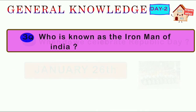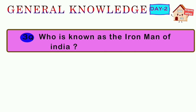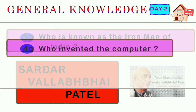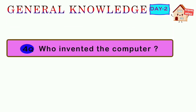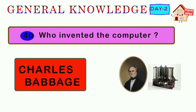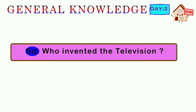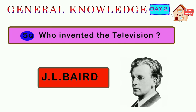Third question: who is known as the Iron Man of India? Answer: Sardar Vallabh Patel. Fourth question: who invented the computer? Answer: Charles Babbage. Fifth question: who invented the television? Answer: JL Baird.